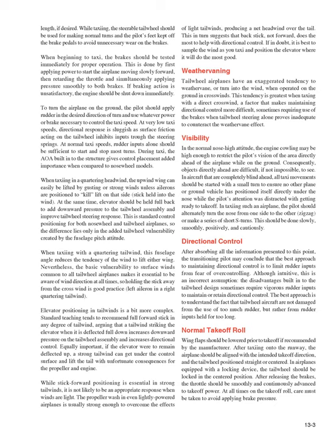When beginning to taxi, the brakes should be tested immediately by applying power to start moving, then retarding the throttle and applying pressure smoothly to both brakes. If braking action is unsatisfactory, the engine should be shut down immediately. To turn the airplane, apply rudder in the desired direction and use power or braking to control taxi speed. At very low speeds, response is sluggish; at normal taxi speeds, rudder inputs alone should be sufficient to start and stop most turns.